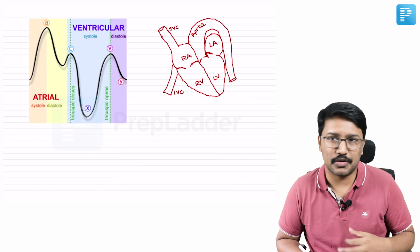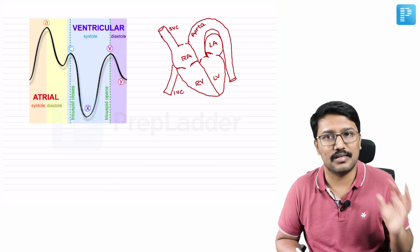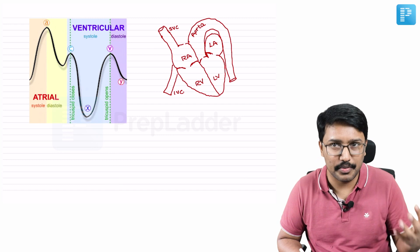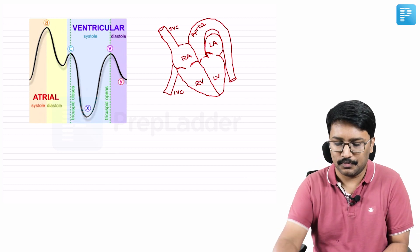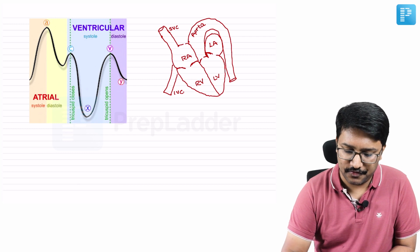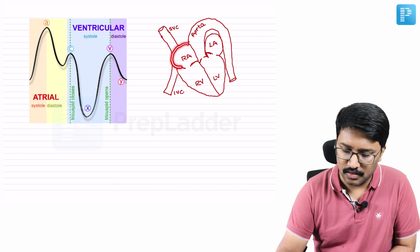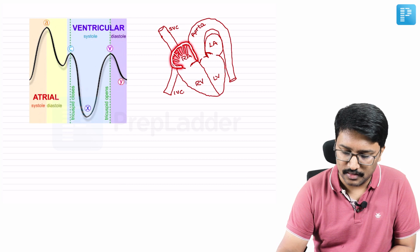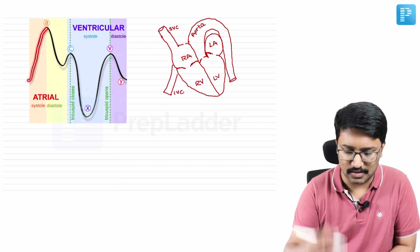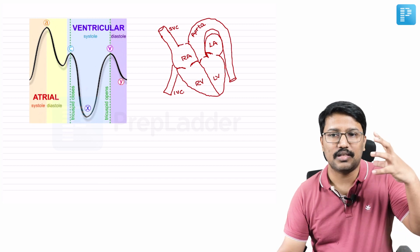Understanding the JVP is of paramount importance — I have seen plenty of MCQs on this in Neetess super speciality and other entrance exams. The first positive upstroke on the JVP, the A wave, is caused by atrial systole — contraction of the right atrium. The pressure is transmitted to the superior vena cava, giving rise to the first positive upstroke.